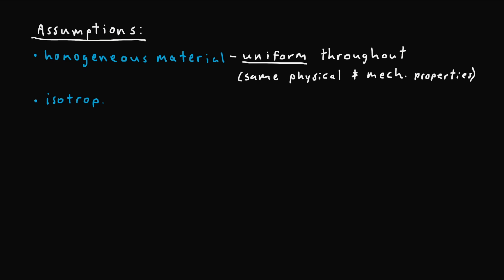Next we must also assume that the body is made of isotropic material which basically means that it has the same properties in all directions. So its physical and mechanical properties are constant regardless of direction or location.